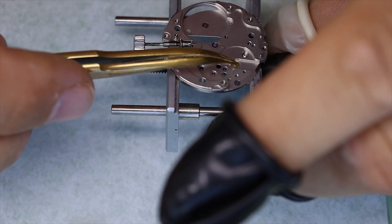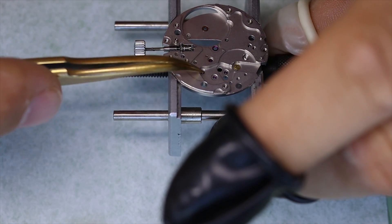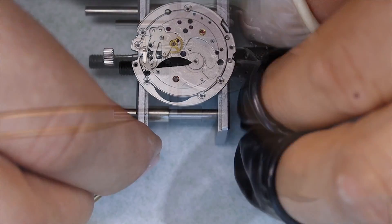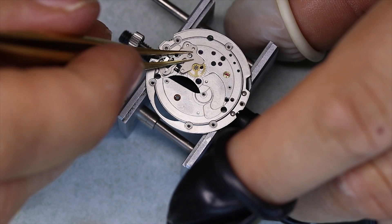All right, we strip down the train side. See that is quite some dirt but nothing damaged, the jewels are not cracked, so we can take off the keyless works.